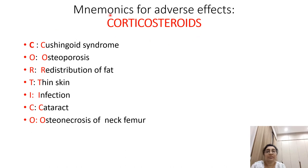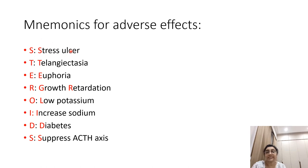The mnemonic for adverse drug reactions of corticosteroids is CORTICOSTEROIDS: C for Cushingoid syndrome, O for Osteoporosis, R for Redistribution of fat, T for Thinning of skin, I for Infection, C for Cataract, O for Osteonecrosis of the femoral head, S for Stress ulcer, T for Telangiectasia, E for Euphoria, R for growth Retardation, O for low pOtassium (hypokalemia), I for Increased sodium, D for Diabetes, and S for Suppression of ACTH axis.